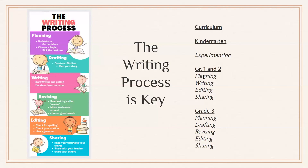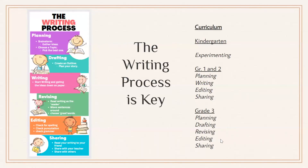A bookmark or reference card of the writing process inside the writing folder is key in helping students become better writers. We always go through planning — brainstorming, gathering ideas, choosing topics — creating a draft or outline, beginning writing, revising to check if it makes sense and sentences are in the right order, then editing for spelling, punctuation, and grammar, and finally sharing. In kindergarten we're experimenting; in grade one and two we're planning, writing, editing, and sharing; in grade three we're planning, drafting, revising, editing, and sharing.